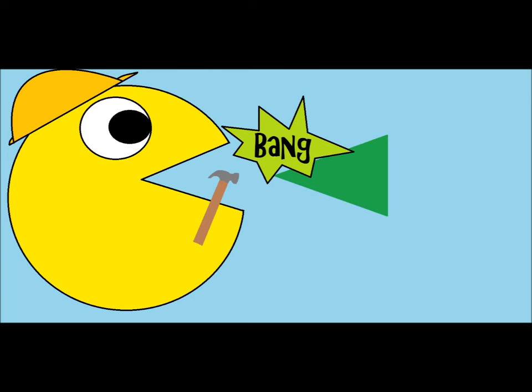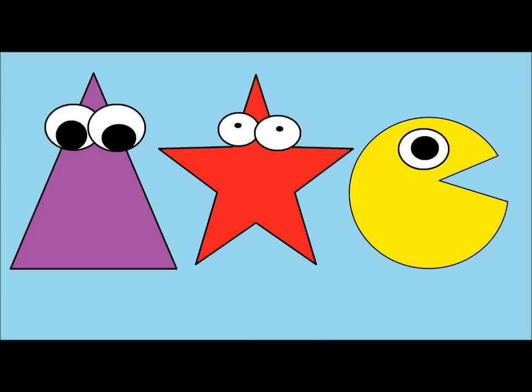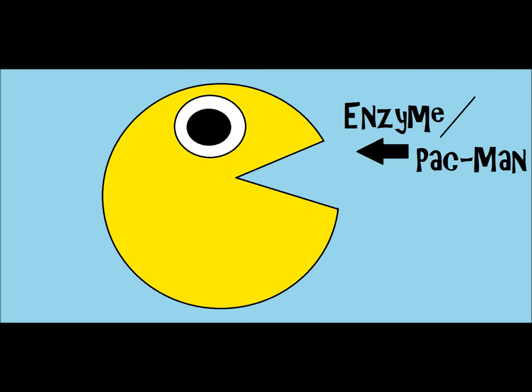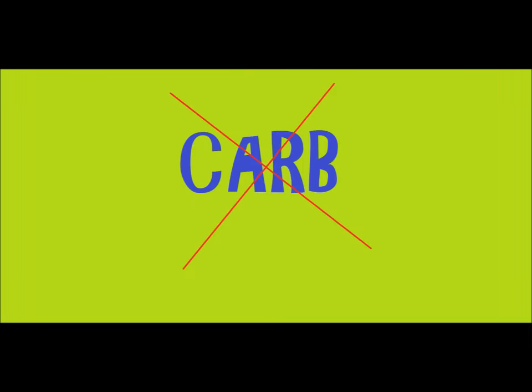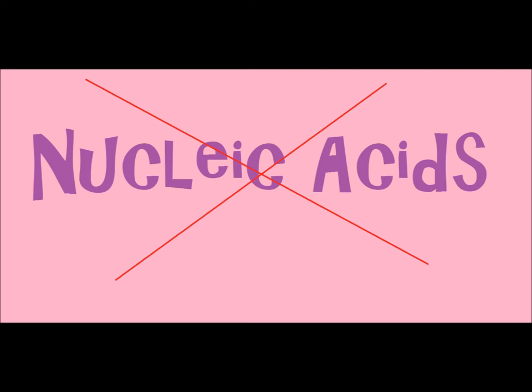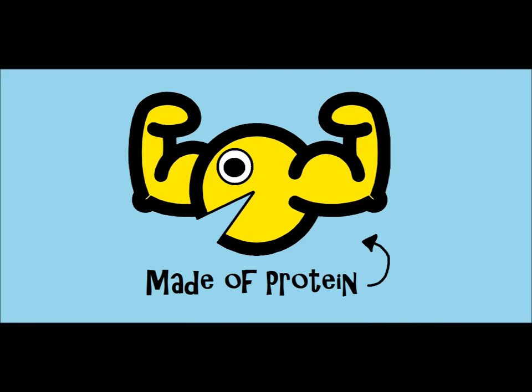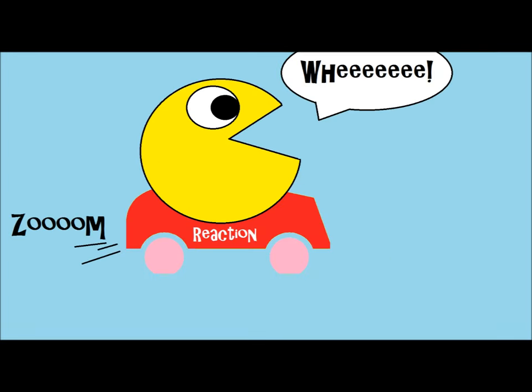Enzymes can do either one — build up or break down. I like remembering that they have this special shape, so I tell myself: enzymes are like Pac-Man — P for Pac-Man, P for protein. Enzymes are made of protein. They're not made of lipids, carbs, or nucleic acids. If those terms don't mean anything to you yet, don't worry, we'll get to them soon. Just remember that enzymes are made of protein.